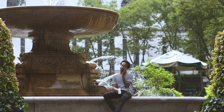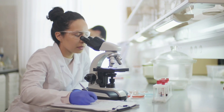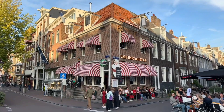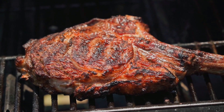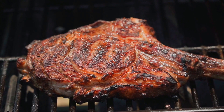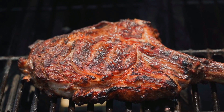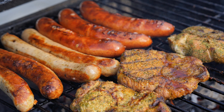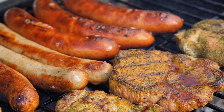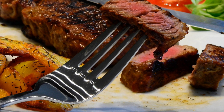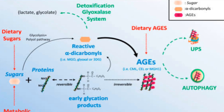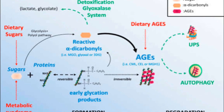Given the detrimental effects of glycation on health and longevity, strategies to mitigate its impact have garnered considerable interest. One such strategy that has gained traction in recent years is the carnivore diet, a dietary regimen that emphasizes the consumption of animal-derived foods while excluding plant-based foods. Proponents argue that it can help combat glycation by minimizing carbohydrate intake, thereby reducing the substrate available for glycation reactions. To understand the potential role of the carnivore diet in mitigating glycation, it is essential to delve into the biochemical mechanisms underlying glycation and the physiological effects of dietary interventions.